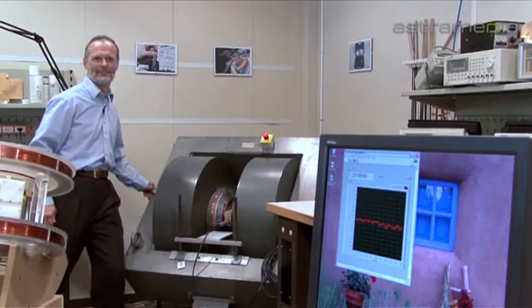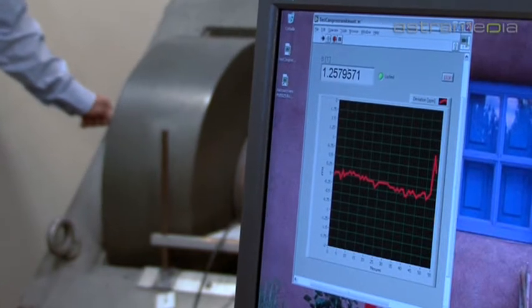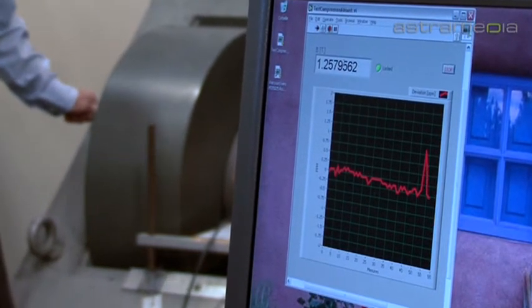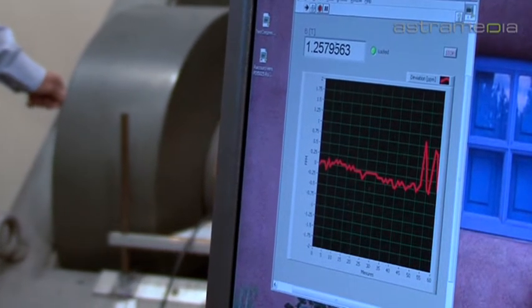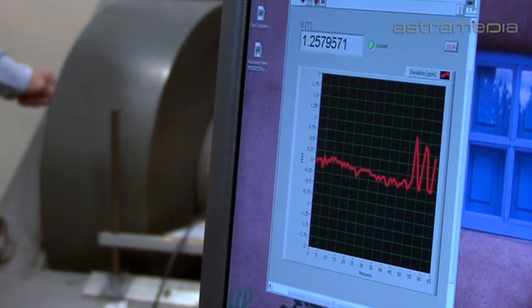See that? By squeezing the poles of this two-ton magnet a tiny bit closer together, we increased the field by a few parts per million. And we measured that. So yes, we really are that precise.